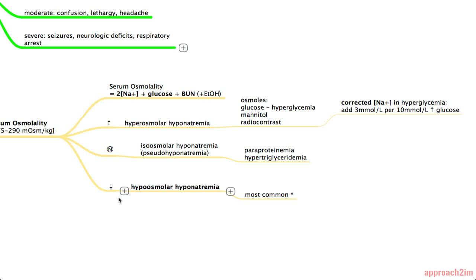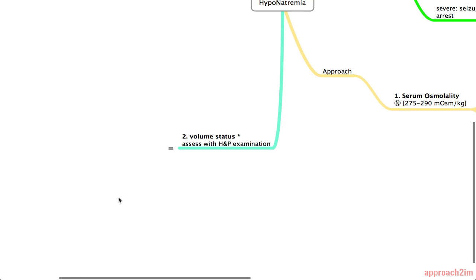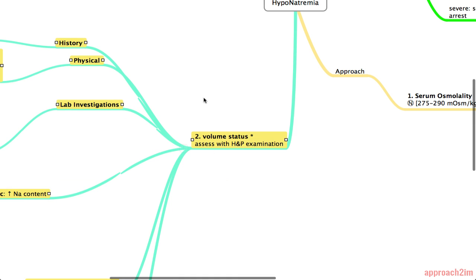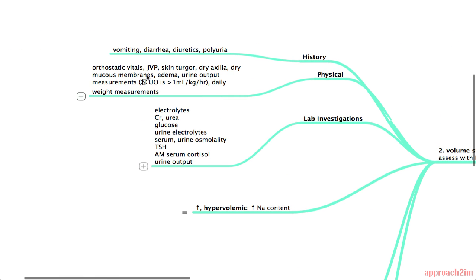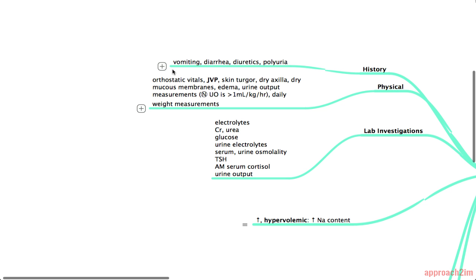Okay so now that you have hypoosmolar hyponatremia, your next step is to do a volume assessment. So you start with the history, so you can ask them if they've been vomiting, if they've had diarrhea or used diuretics and also if they have any polyuria.